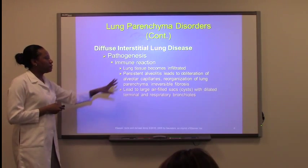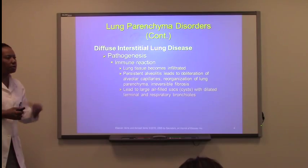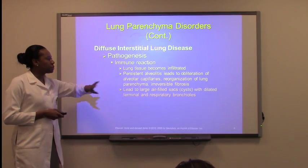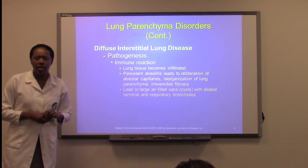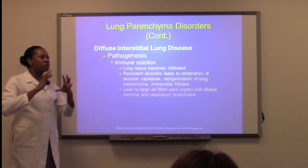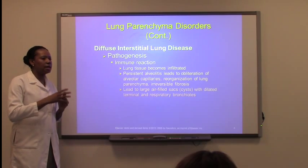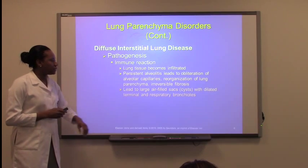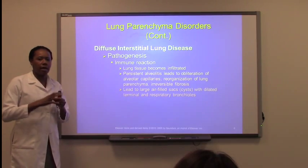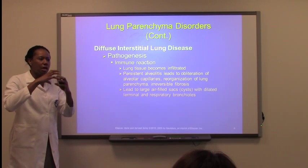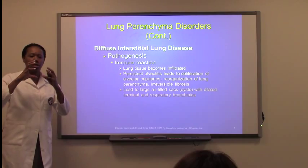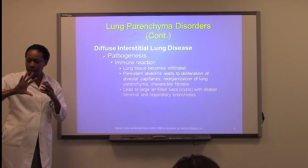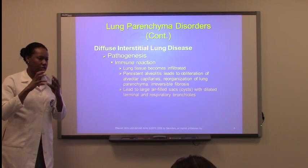Lung tissue can become infiltrated from all the white blood cells that come into place. Patients can have persistent alveolitis — the alveolar level gets inflamed, fills up with cells, and causes a lot of issues along with fibrosis and diffusion problems. Because diffusion is not taking place, sometimes these alveolar sacs start to enlarge because they're filled with air that is not being diffused as it should, causing very large sacs.